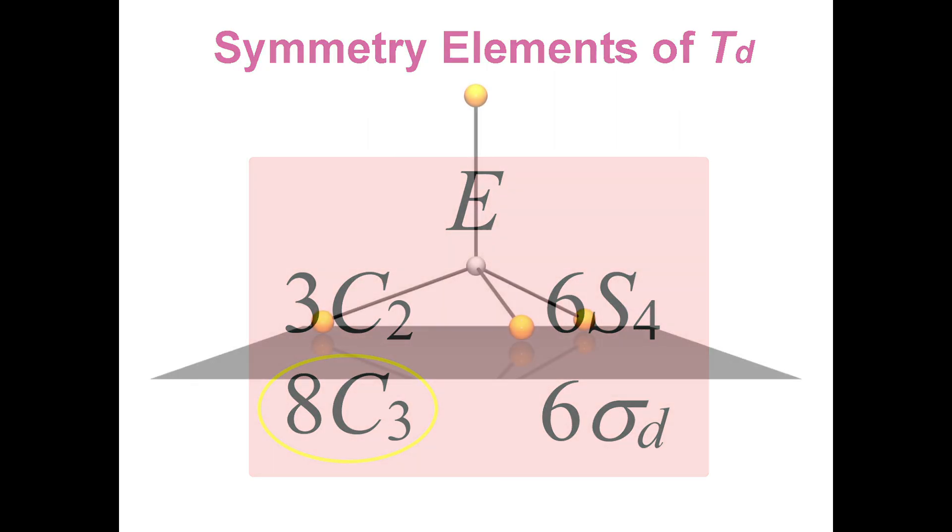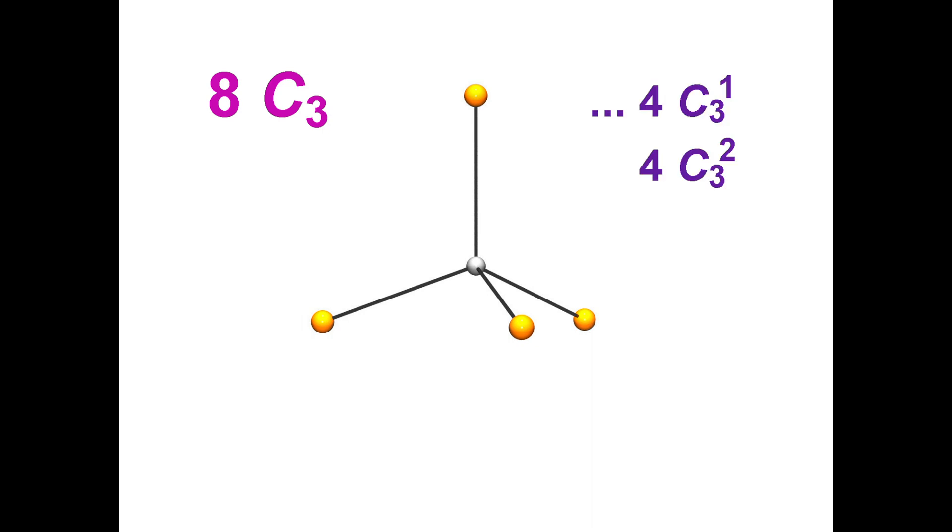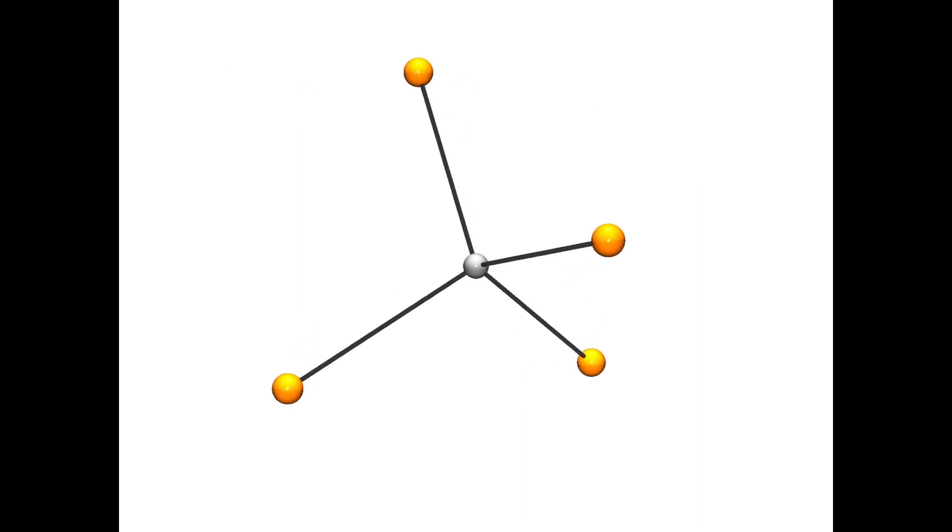More accurately, these are actually four C3¹ axes and four C3² axes. The easiest way to find these is to place the model of your tetrahedral molecule on a surface. Just like for the octahedral molecule, it sits on a tripod of atoms.